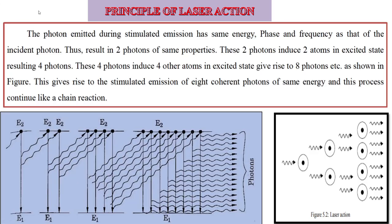From the laser action diagram: one photon is incident on the excited state atoms; one atom returns to the ground state and two photon light beams are emitted. Two photons incident on two atoms produce four photon beams; four photons produce eight laser beams; eight photons incident on eight atoms produce 16 photon light beams. This multiplication of photon beams in a chain reaction amplifies the light signal.